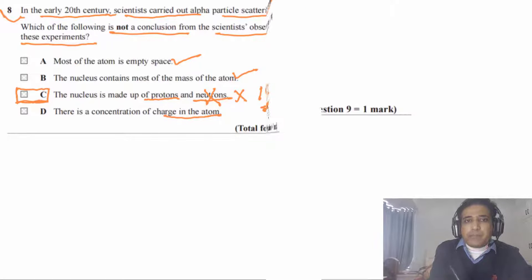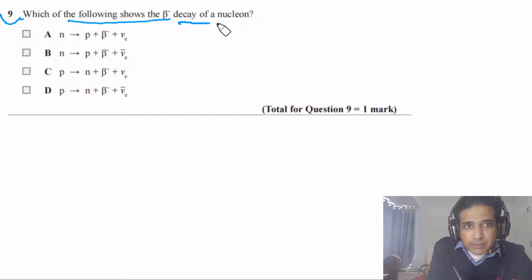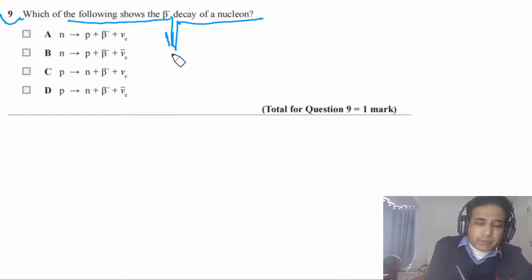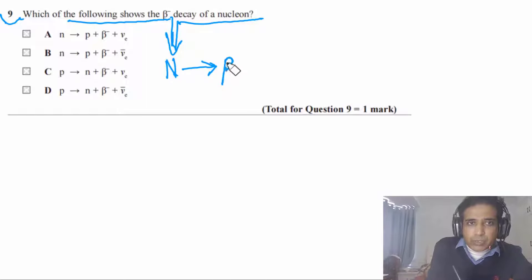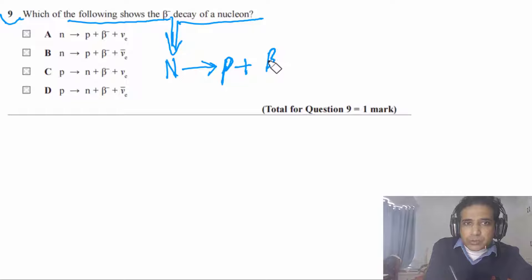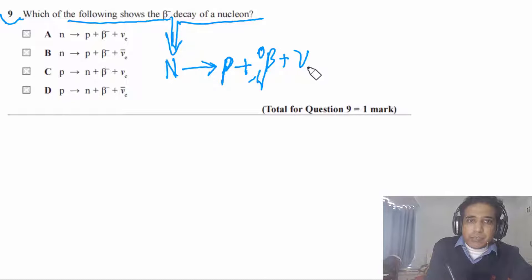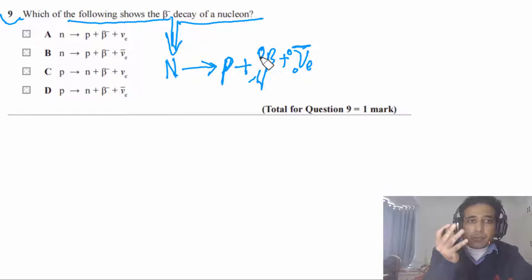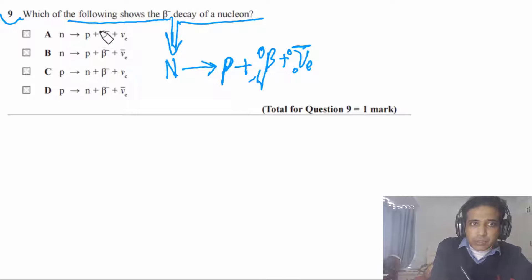Question 9 asks which shows beta minus decay of a nucleon. In beta minus decay, a neutron decays into a proton. A beta minus particle (electron) is emitted, and there must be an electron antineutrino to conserve lepton number.